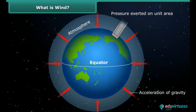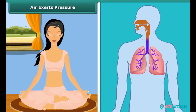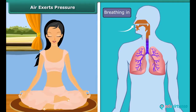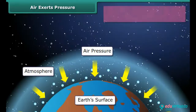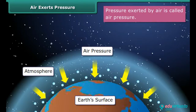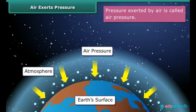Air exerts pressure. Have you ever thought about what helps our lungs to inhale air? It is air pressure which forces air into our lungs when we breathe in. Earth's atmosphere is made up of a number of gases. These gases exert pressure on the earth's surface. We call this pressure as air pressure.